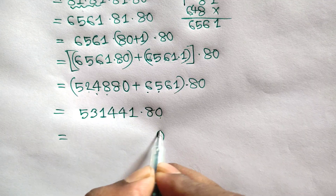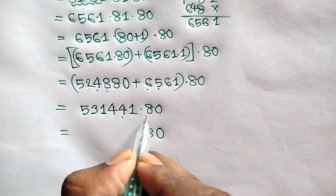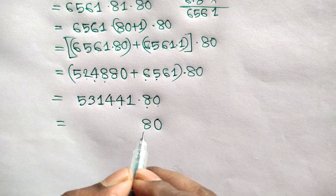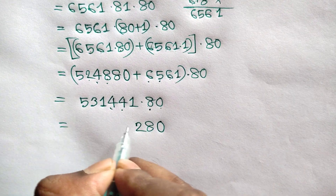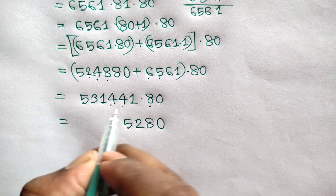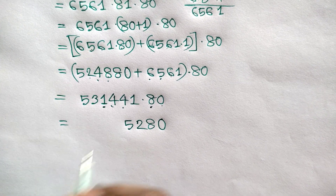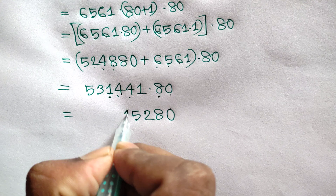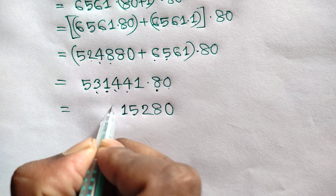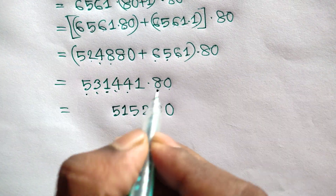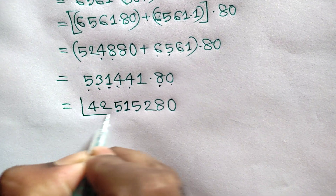We write 0 first. 8 times 1 is 8. 4 times 8 is 32, 3 is carry. 4 times 8 is 32, plus 3 is 35, 3 is carry. 8 times 1 is 8, 8 plus 3 is 11, 1 is carry. 3 times 8 is 24, plus 1 is 25, 2 is carry. 5 times 8 is 40, 40 plus 2 is 42. That is our final answer.